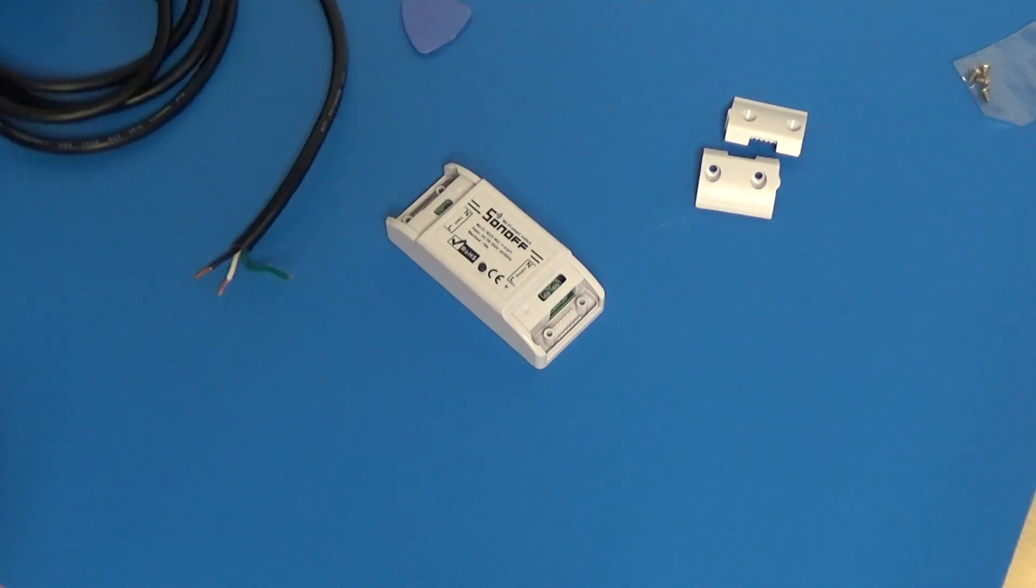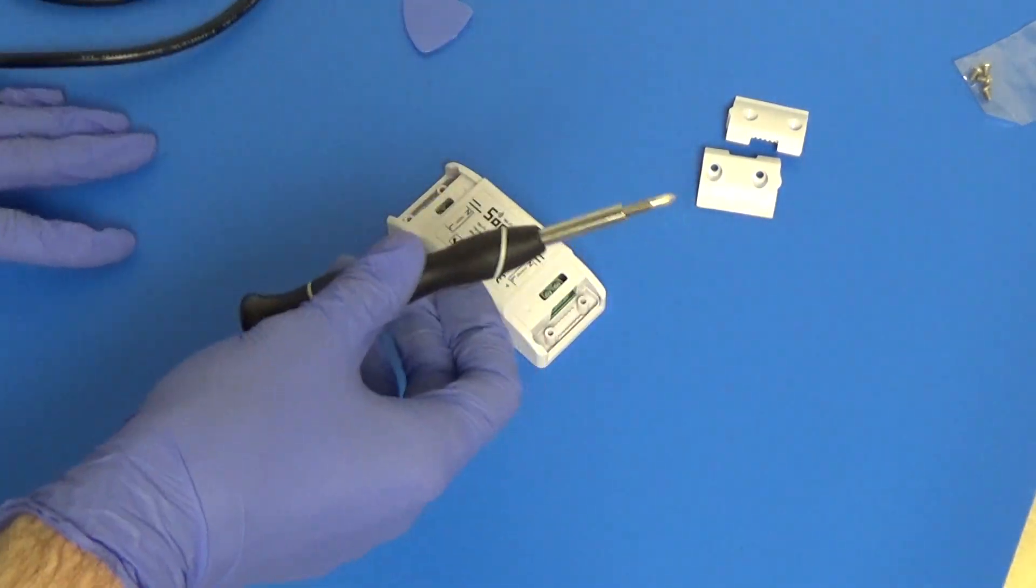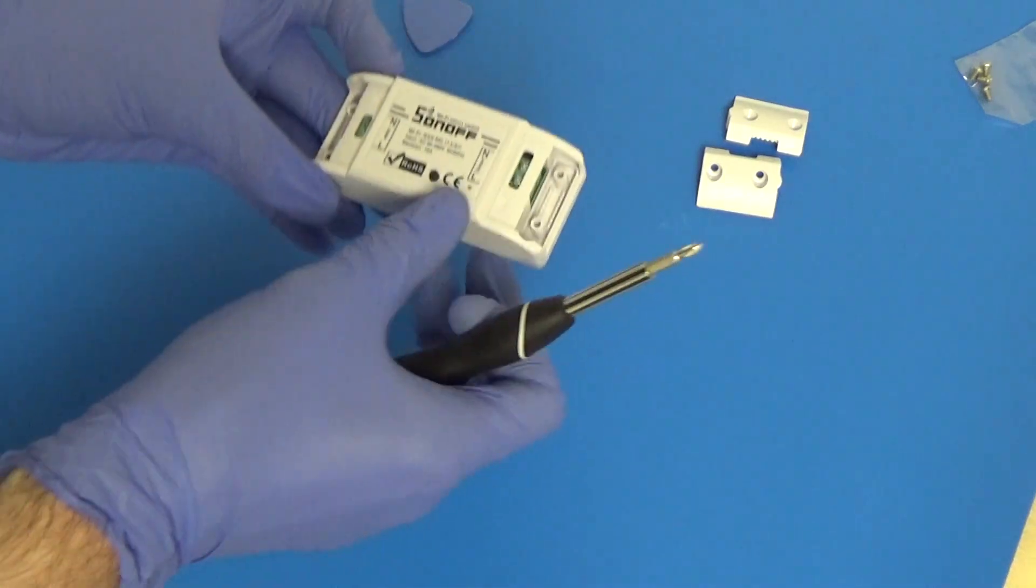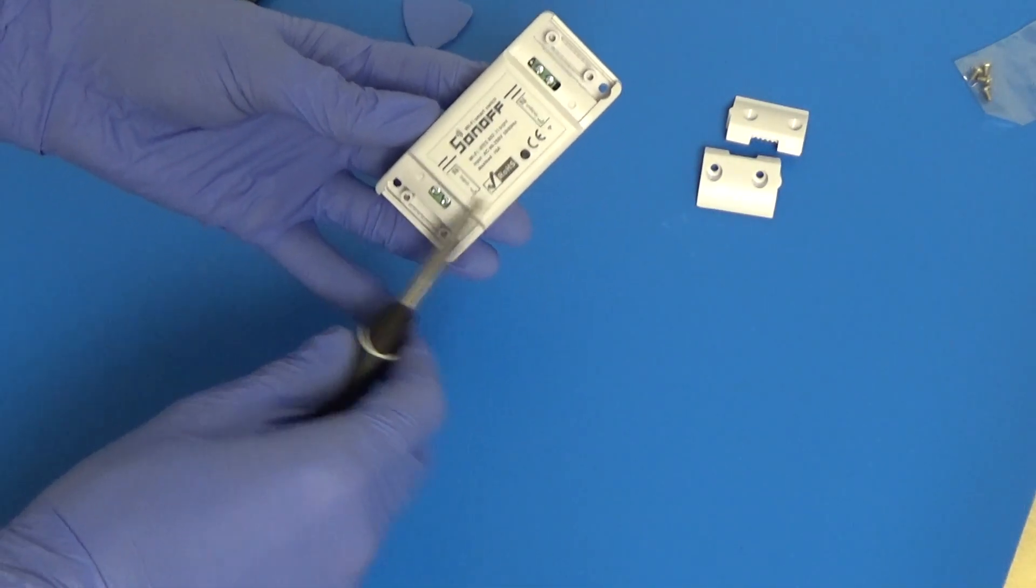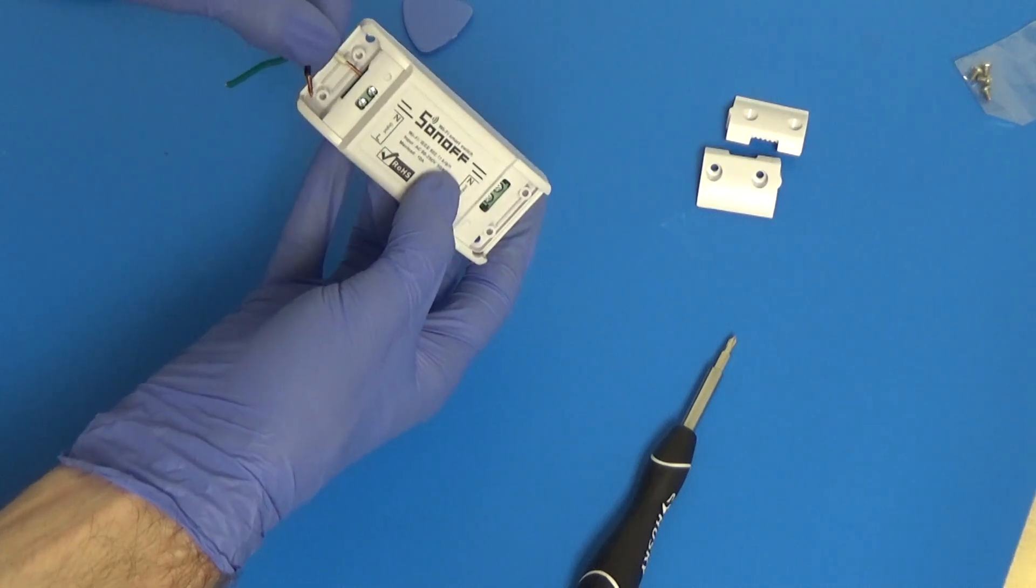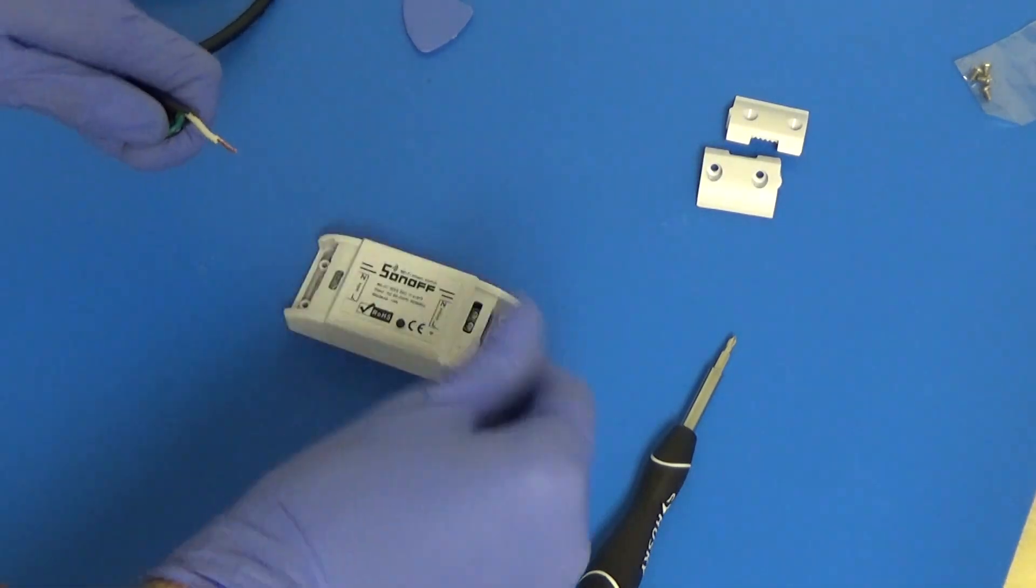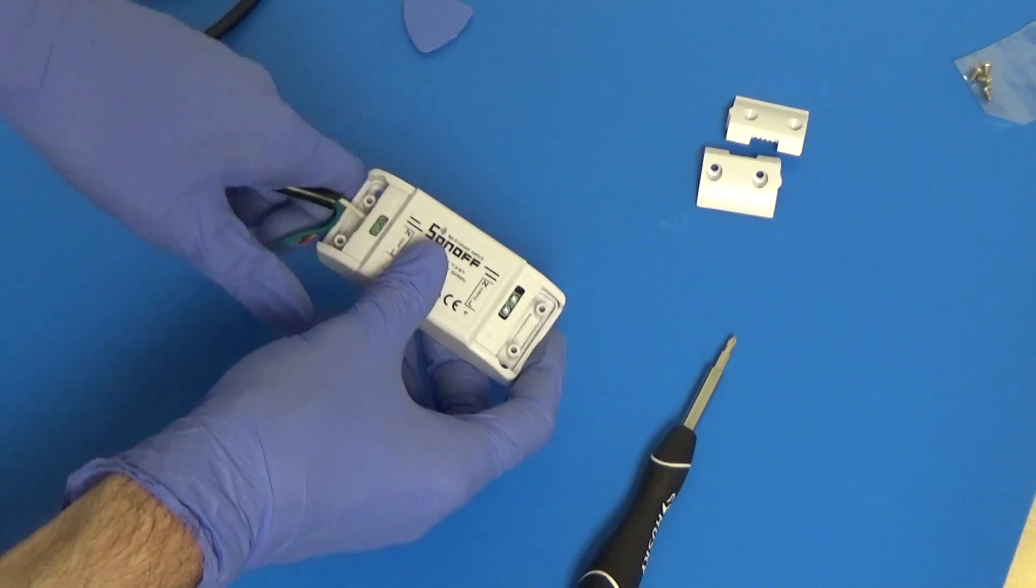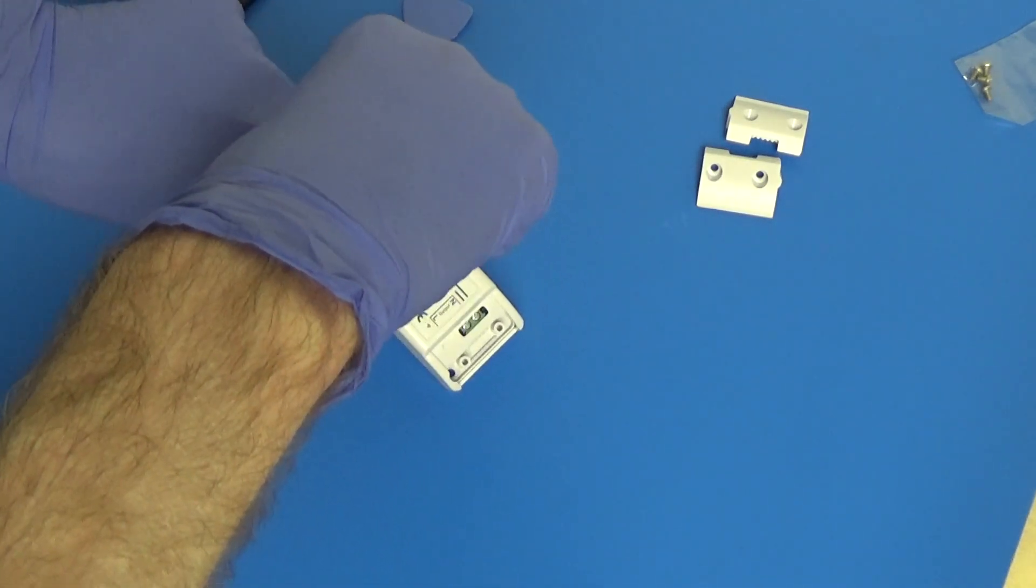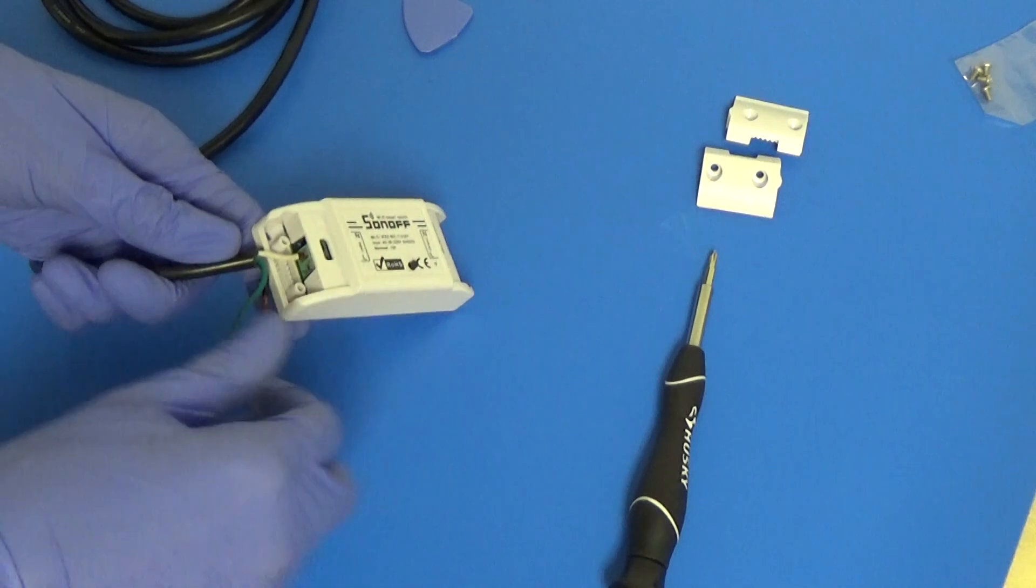So what we're going to do is I have this Phillips where we're using a number zero bit. So we're just going to loosen the two screws in the terminal block. Now we have our neutral and live or line. So we'll go ahead and make those connections here. Put our neutral. This is a little bit difficult. Okay, that's in there. We want to tighten it down. Make sure that's nice and tight and of course that we don't have any stray strands hanging out.